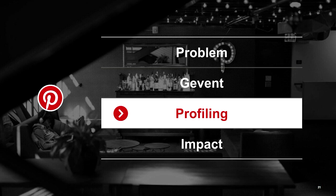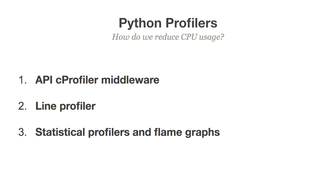To make things better, we need to figure out what's going on — and for that we need profilers. There's a misconception in Python that there are no good profilers, and if you don't know how to find what's expensive you can't optimize things. You can guess, but more often than not your guess is wrong. We looked at three profiler types: the API C profiler middleware, a line profiler, and statistical profilers with flame graphs.